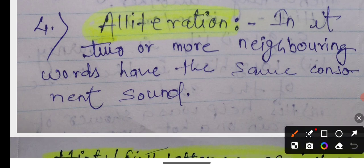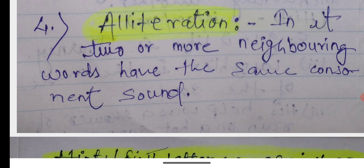Alliteration. It is a lot of use in sentences, especially in exams. In it, two or more neighboring words have the same consonant sound. When consonant sounds are repeatedly used, it's called alliteration.